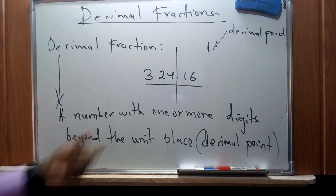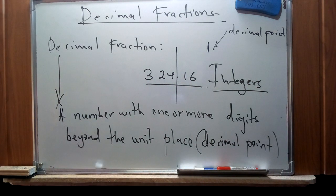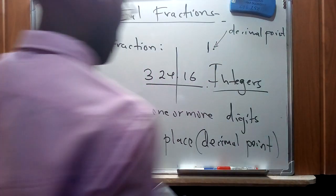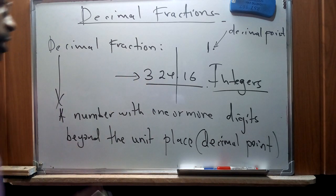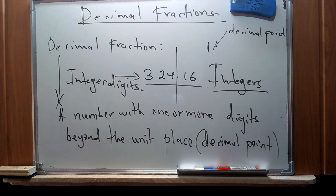The characteristic of numbers that follow under that category is what we refer to as decimal fractions. The integer digits are separated from the decimal digits by this period called a decimal point. On one side of the decimal point we have the integer digits, and on the other side we have the decimal digits.